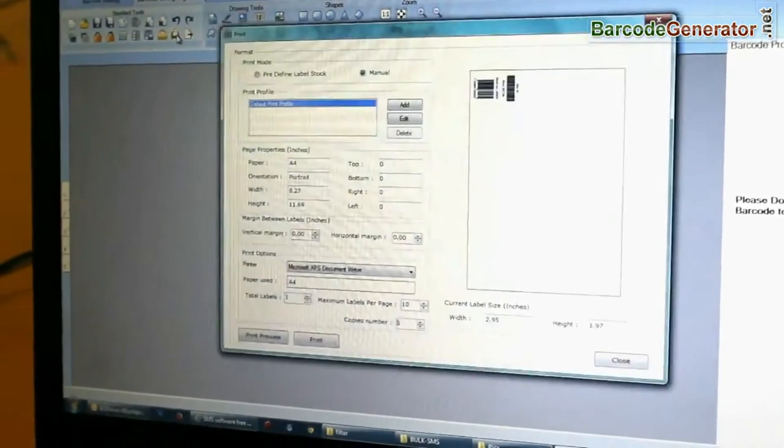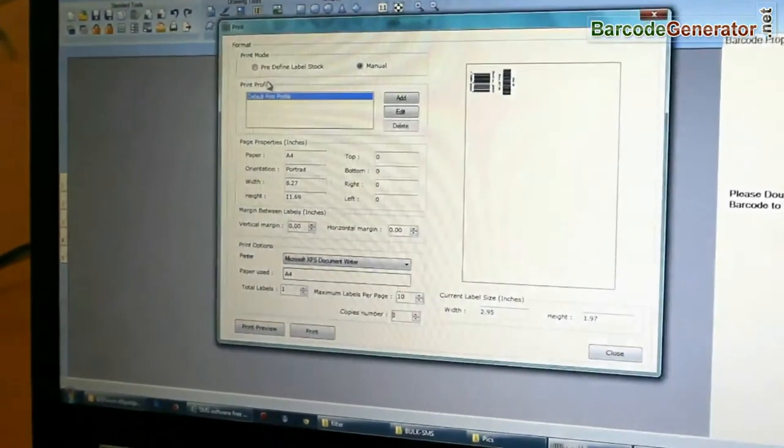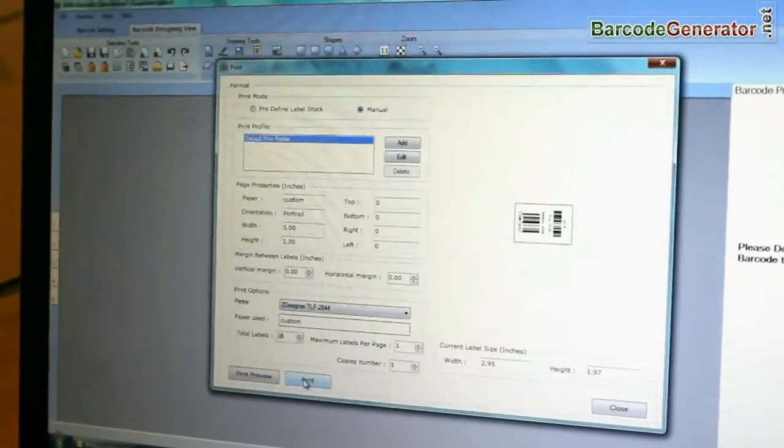Go to print option. Set your printing settings. Adjust number of labels. Click on print button.